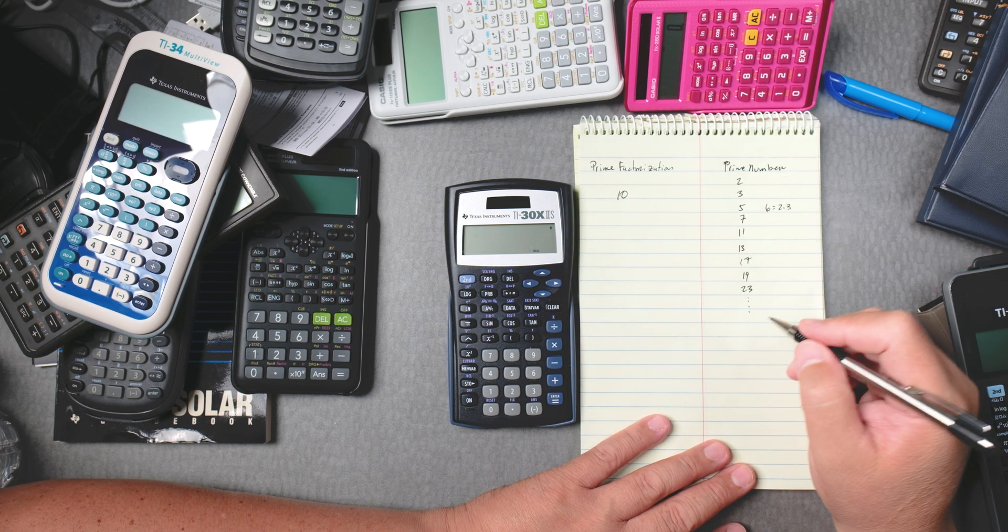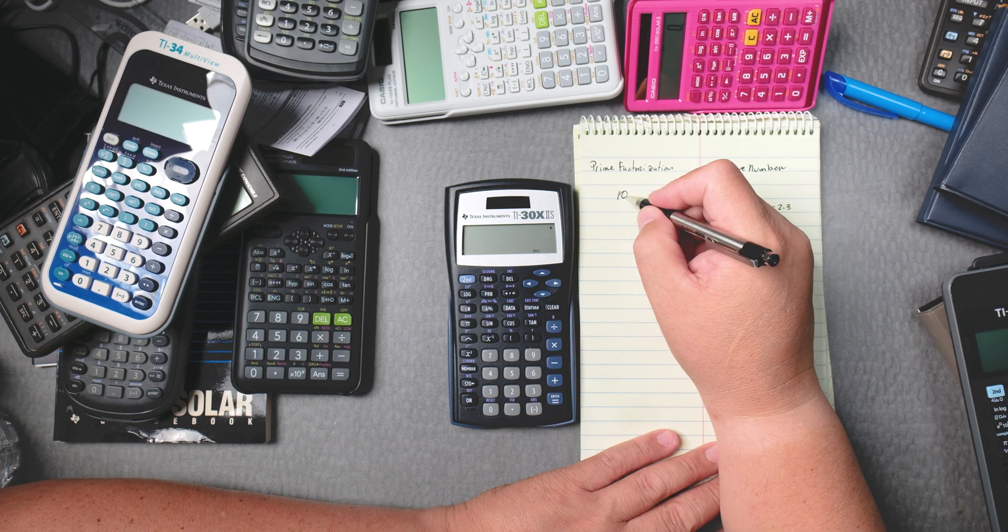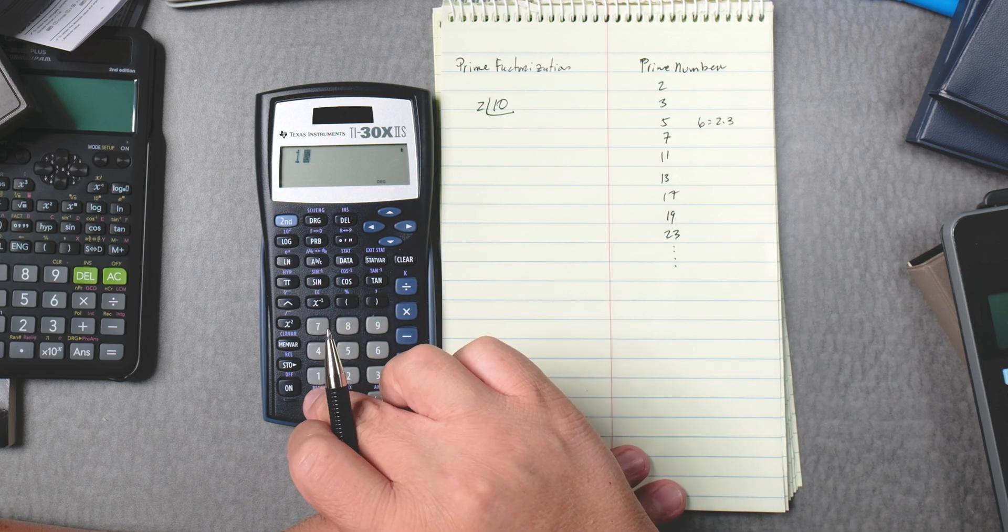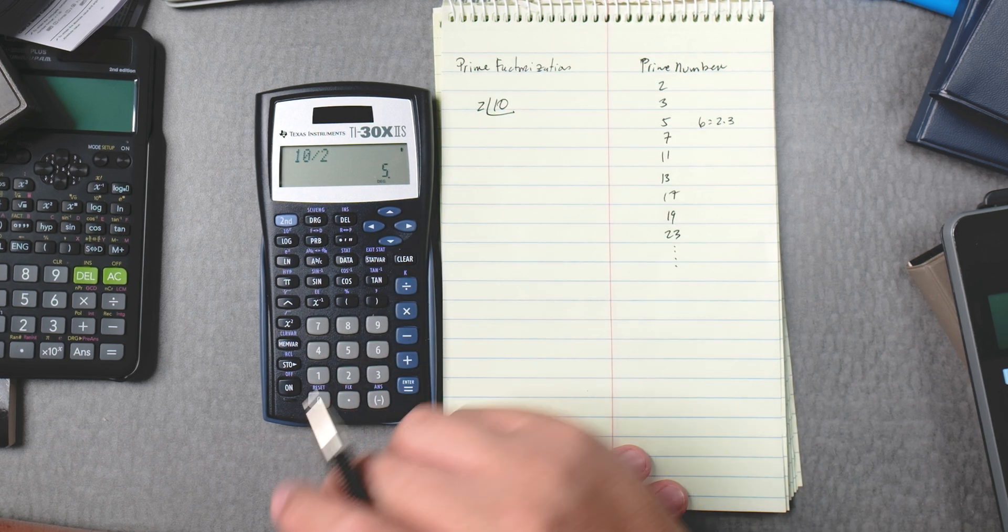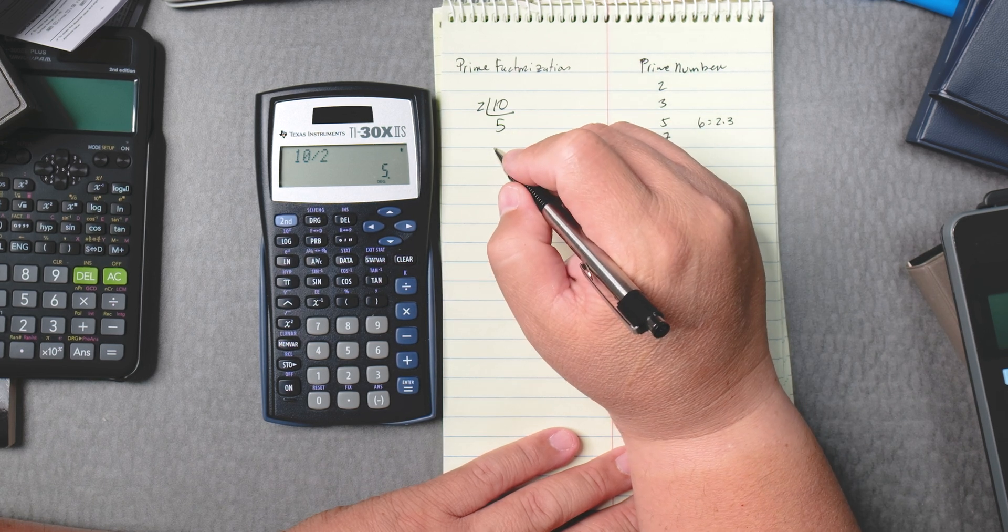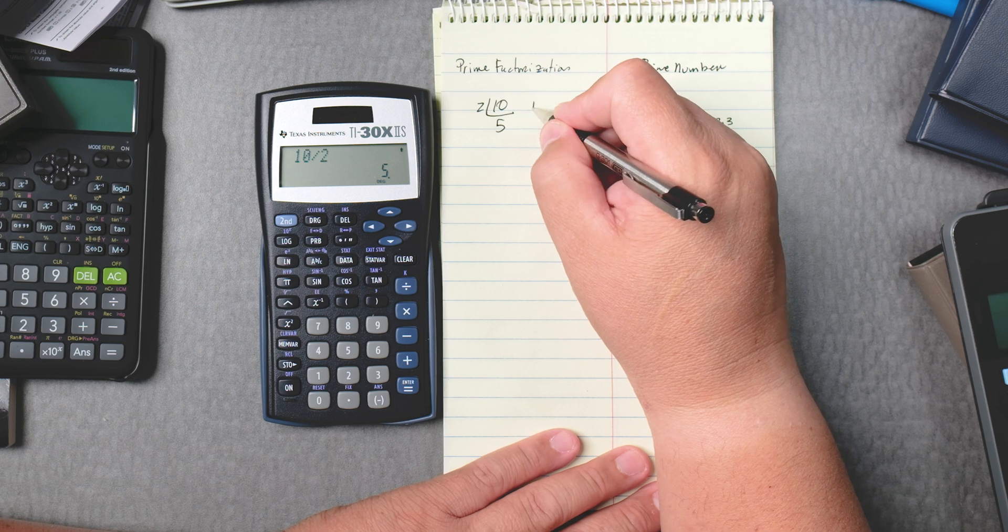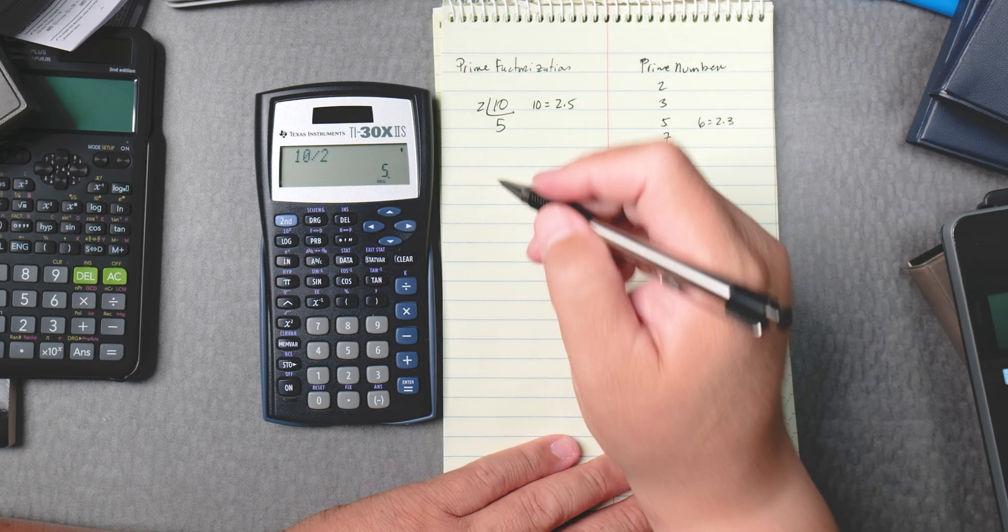For example, 10. Can we do the prime factorization of 10? Yes, we can. 10 ends in zero, so we know that 2 goes into 10. So we can use a calculator: 10 divided by 2 equals, and it gives you 5. So the prime factorization of 10 is equal to 2 times 5.